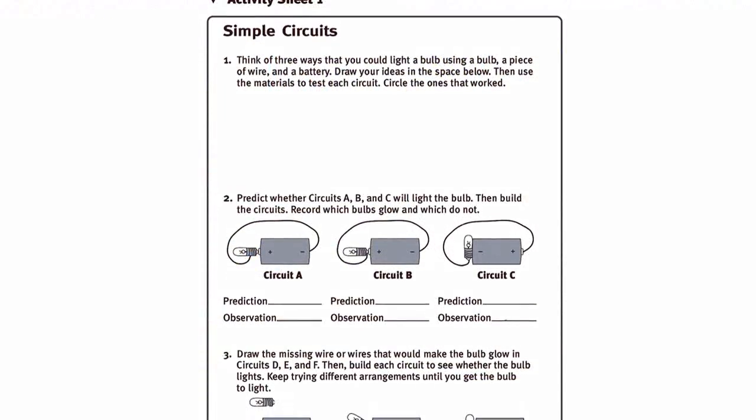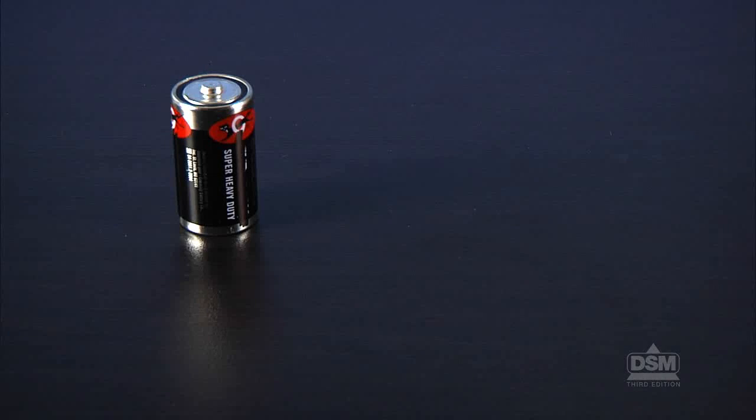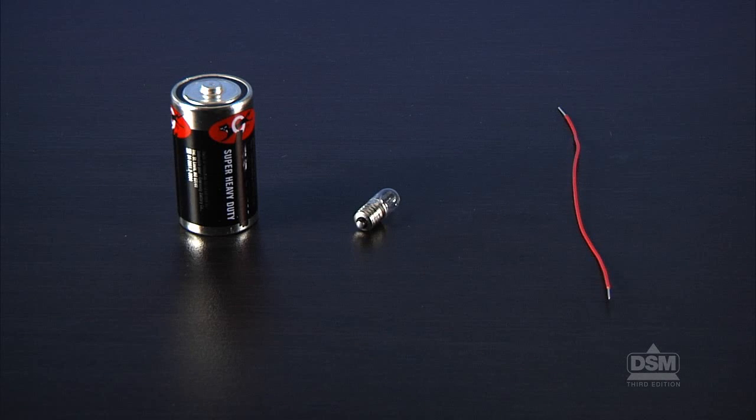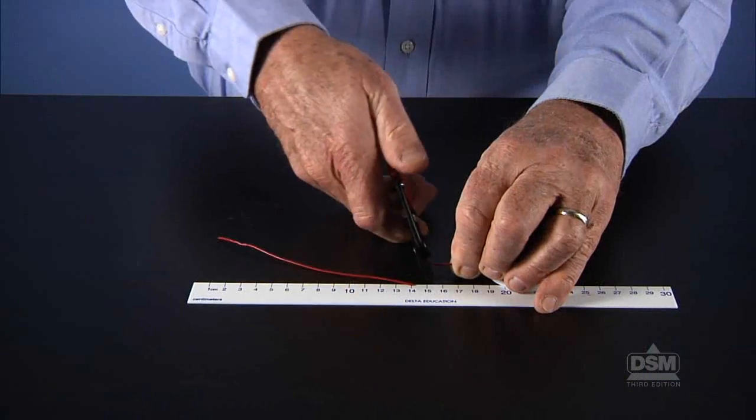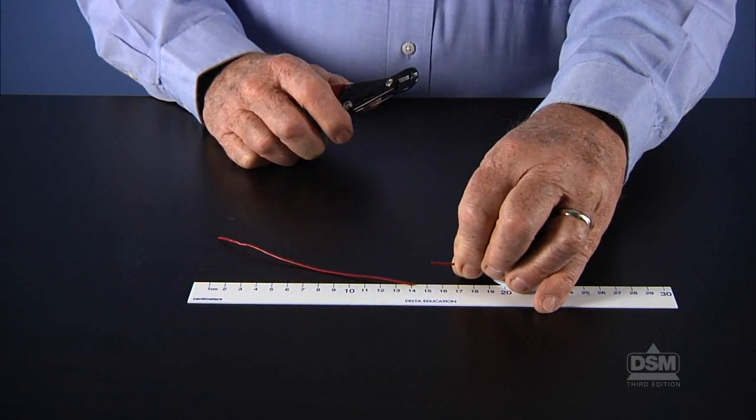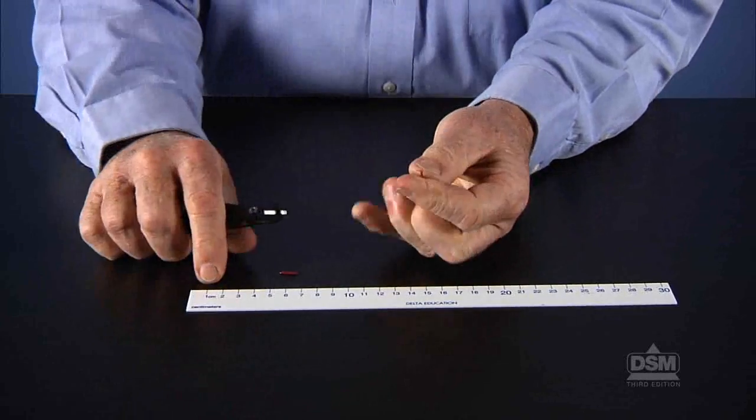To prepare for the activity, make a copy of Activity Sheet 1 for each student. Divide the class into teams of two. Each team of two will need one battery, one bulb, and a piece of wire. Instruct each team to use the wire cutters to cut a 15 centimeter piece of insulated copper wire and strip the insulation from the ends of the wire pieces.